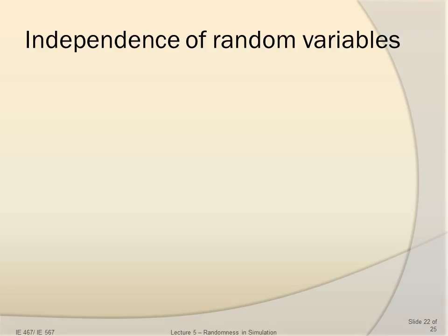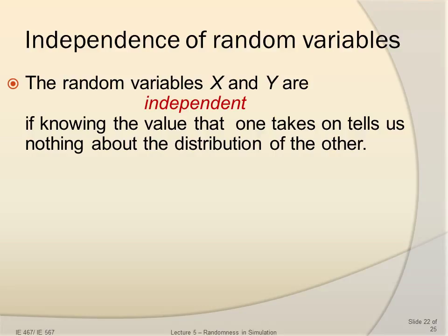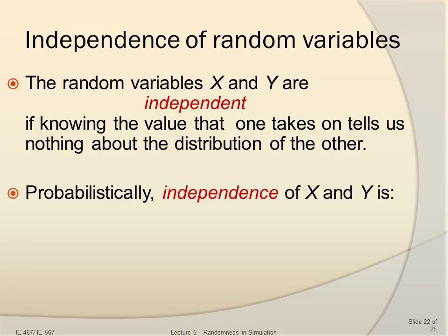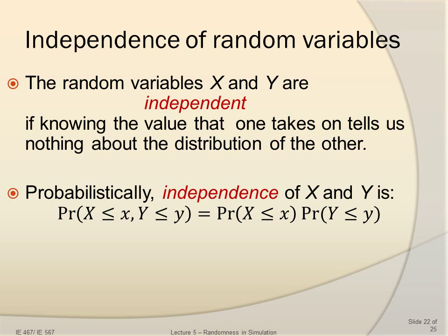Now let's talk about independence of random variables — a very important condition. We need to know whether random variables can be assumed independent because it's a very strong assumption. The random variables x and y are independent if knowing the value that one takes on tells us nothing about the distribution of the other. Probabilistically, independence of x and y can be expressed as: the probability of (x ≤ x and y ≤ y) equals the product of the individual probabilities.